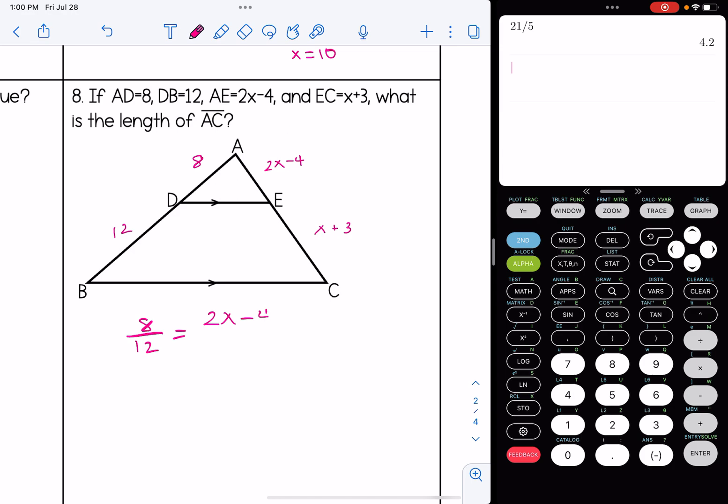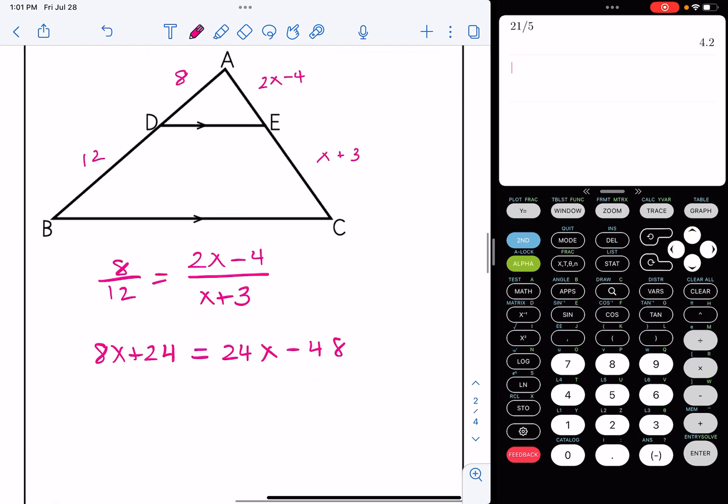We're going to cross multiply. 8 times X plus 3, distribute that 8 across the X plus 3. So that's 8X plus 24. The other diagonal is going to give me 24X minus 48 once I distribute the 12 across. If you're unsure what I mean about distributing, think about it like this. We really have 8 times X plus 3 and we have 12 times 2X minus 4. Now let's solve our multi-step equation here. Let's get the variables on the same side.